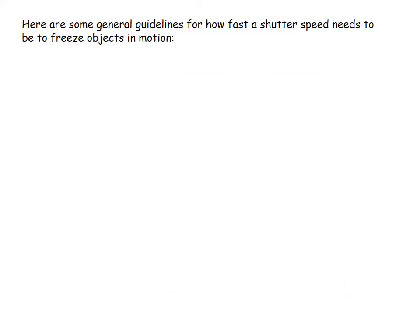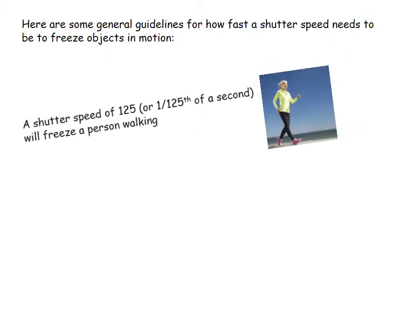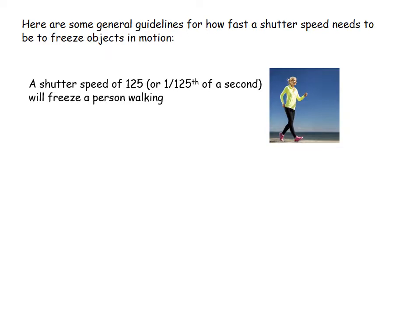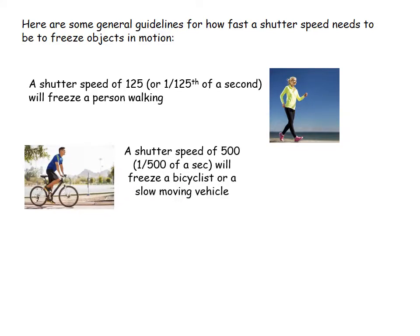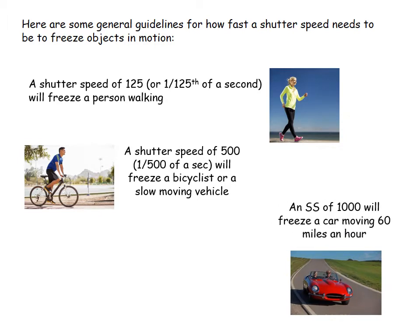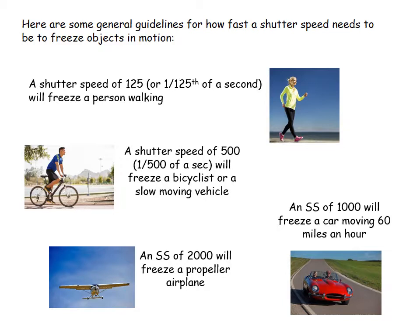Here are general guidelines for how fast a shutter speed needs to be to freeze certain moving objects. A shutter speed of 1/25 or 1/125 of a second will freeze a person walking. A shutter speed of 1/500 will freeze a bicyclist or slow-moving vehicle around 30 mph. An SS of 1/1000 will freeze a car moving at 60 mph. And an SS of 1/2000 will freeze a propeller airplane. As objects move faster, you need a faster shutter speed to freeze that motion.